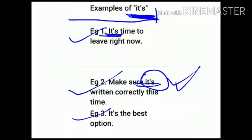Come to last example: It's the best option. Again, IT apostrophe S. Try saying this example: It is the best option. So instead of writing it is, we have written it's using an apostrophe.